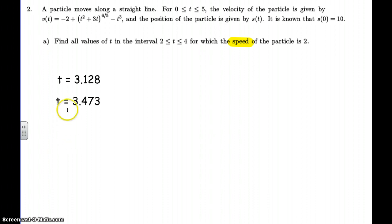Okay. And so that is both values in the interval from 2 to 4 for which the speed of the particle is 2. That completes part A.